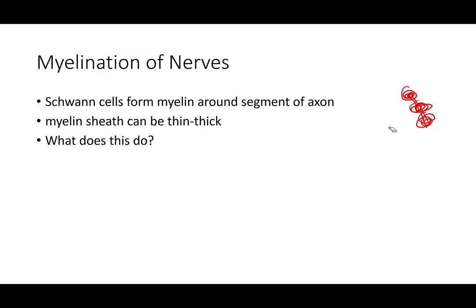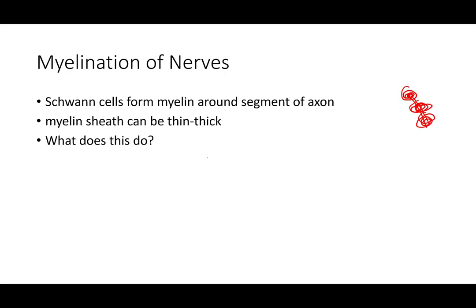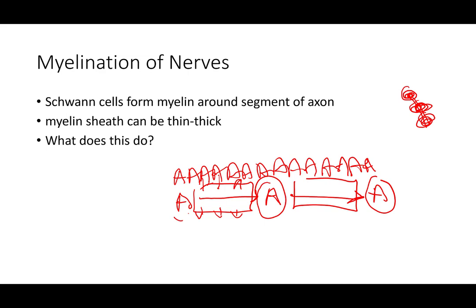With myelinization, we need less input to maintain depolarization down the axon. Think of it like this: without myelin, every step of an action potential requires re-energizing, like typing 'A' repeatedly on a keyboard. With myelinization, it's like hitting 'A' then tab — you cover the same distance with less input. The myelin prevents easy loss of depolarization through the membrane, so it's only at the nodes of Ranvier that we have dense sodium and potassium channels.